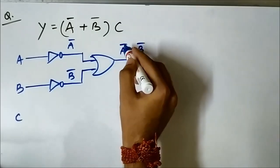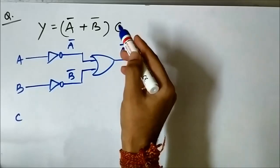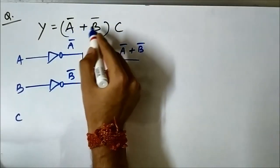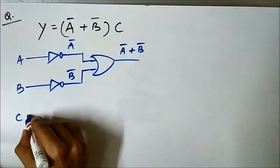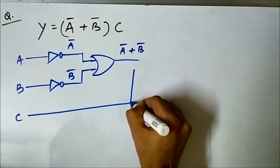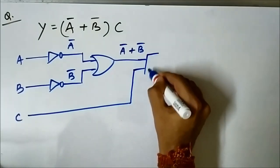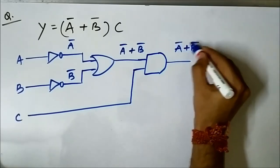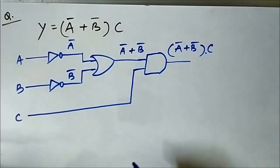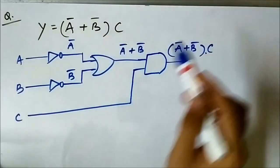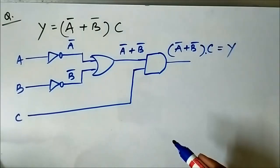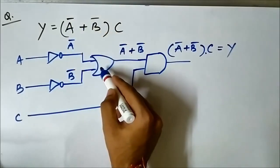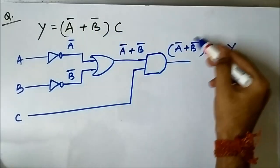When I say plus it means OR; when I say multiplication it means AND; and bar means NOT. We require (Ā + B̄) AND C, so we give C and the OR gate output to a two-input AND gate. This gives us the final logic output Y = (Ā + B̄) · C.